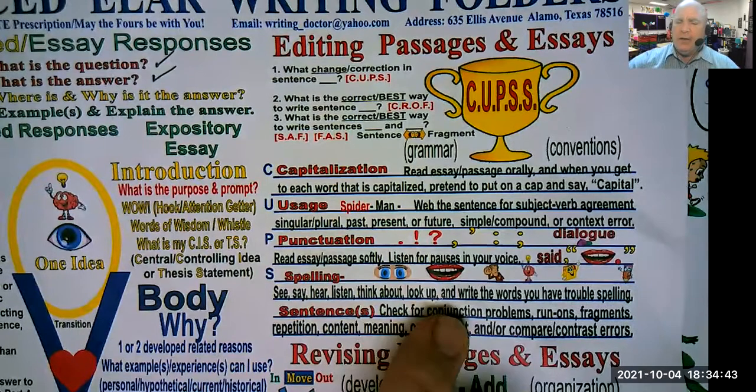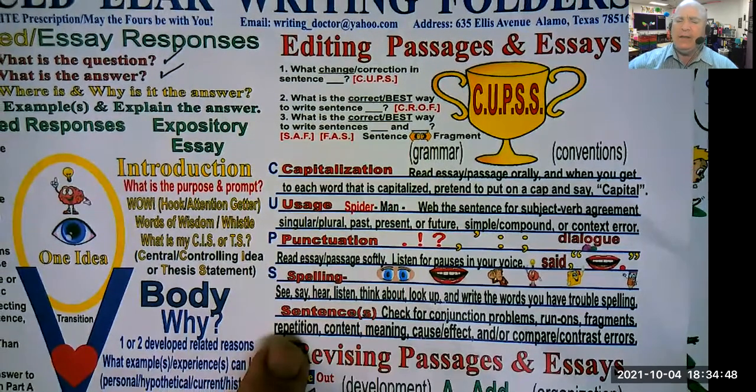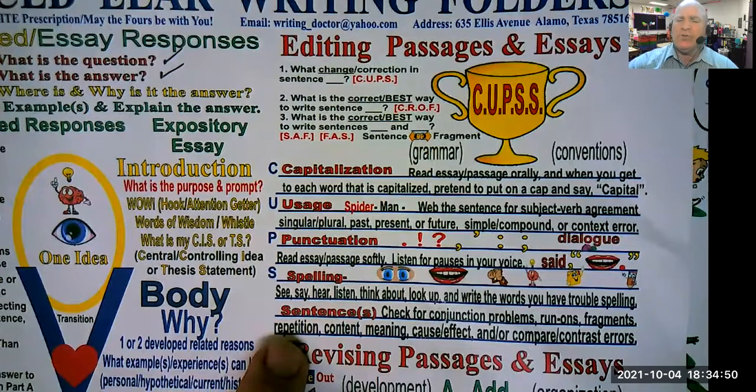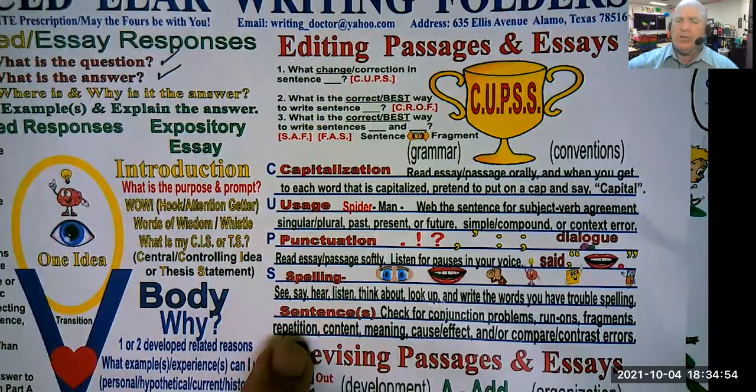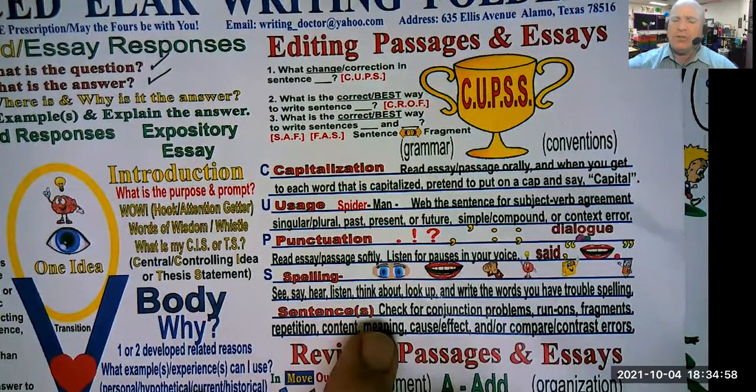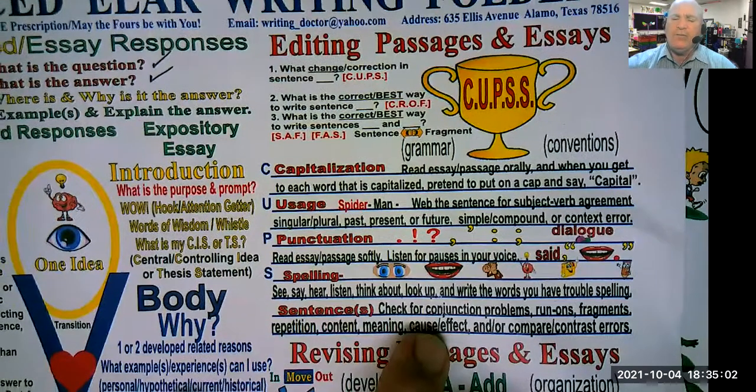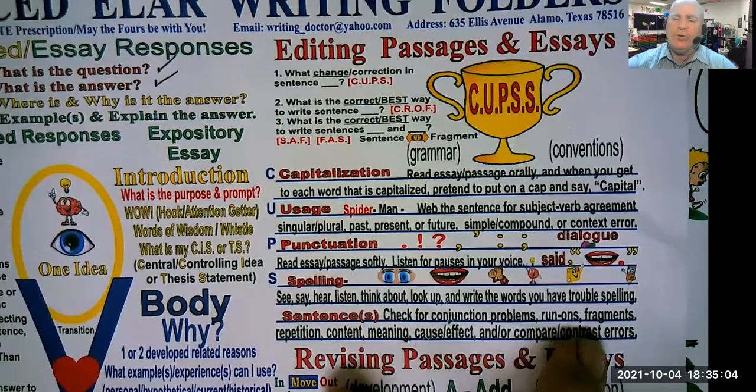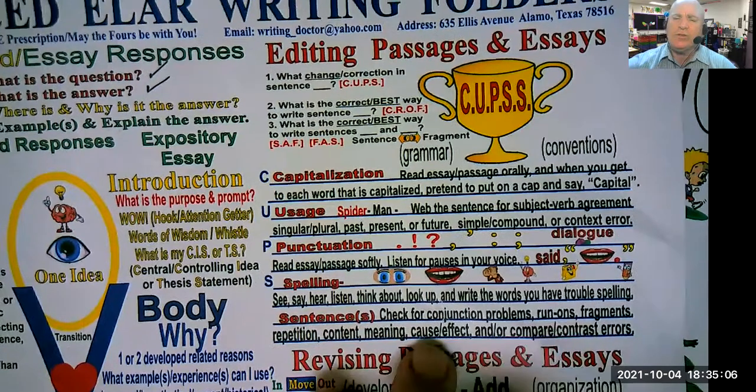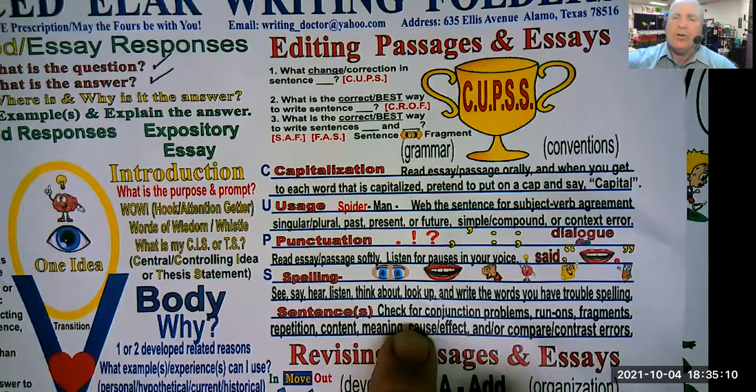And then in both the passage and in the answer choices, look for repetition, content changes, meaning changes, wrong cause and effect relationships, or wrong compare and contrast errors. If any of those things happen, you're going to eliminate those choices and only select the one that is the best correct or correct.